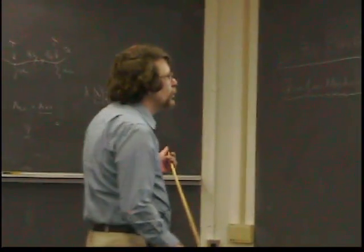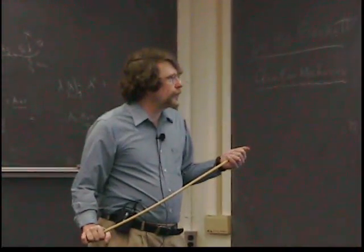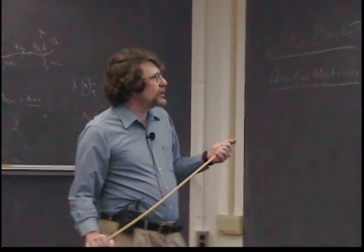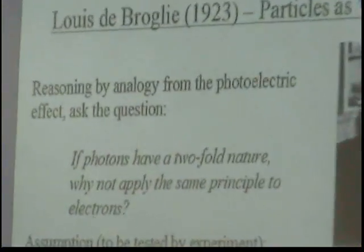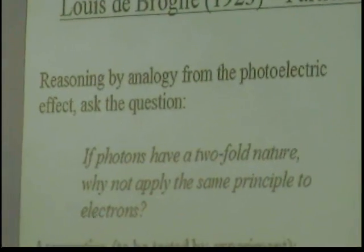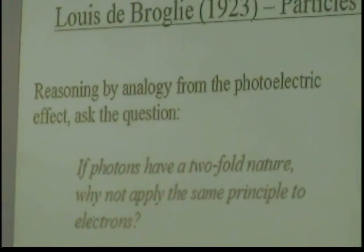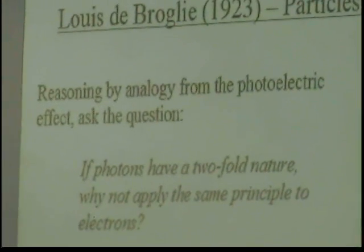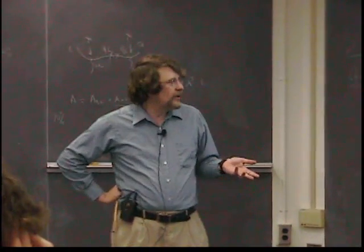So a Frenchman came along in 1923. His name is Louis de Broglie. Louis, in his PhD thesis, asked the following question. He said, from reasoning from the photoelectric effect that we talked about before, he said we should ask the question: if photons have a two-fold nature, which we just said they did, they were waves and particles at the same time, why not apply the same principle to electrons? Why not say that electrons might also have a two-fold nature? That we think they're particles, but maybe they're also waves, he said.